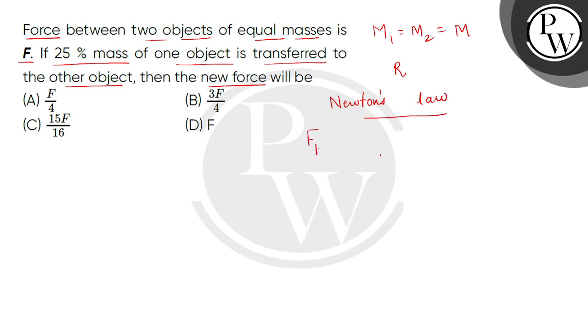So here we get the force in the first case: product of two masses, because both masses are the same, divided by the square of the distance. This is equation number one.